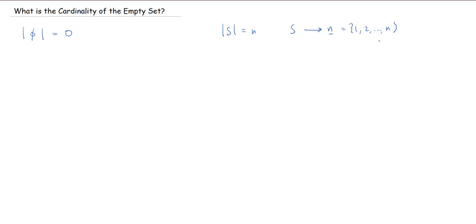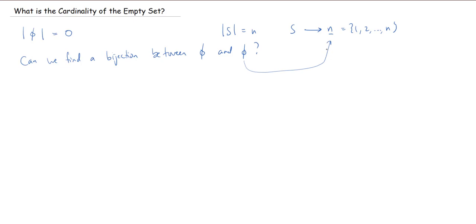Well, you certainly don't want to be using the notation with ones through n's, but you kind of want to have a set with nothing in it. That's the only set with zero elements. And so it creates kind of this almost paradoxical definition where you say the empty set has cardinality zero — or some set has cardinality zero — if you can build a bijection with the set with zero elements, which is the empty set. So for that to make any sense, we have to ask: can we find a bijection between the empty set and the empty set?